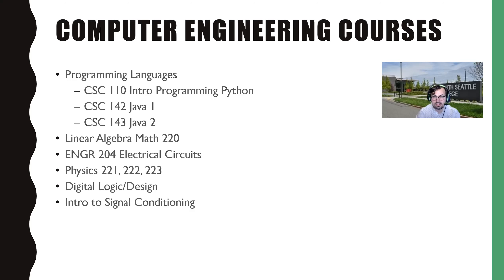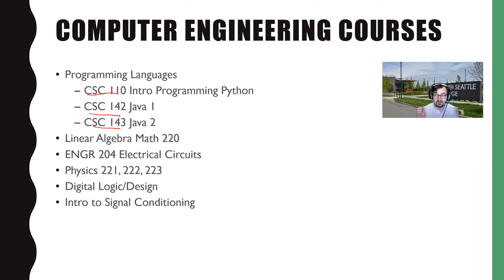Here are some engineering courses you can expect to take as a computer engineering student. For programming languages, the courses we have at South are CSC 110, CSC 142, and CSC 143. These are the core computer science major courses. The Python course teaches you a lot about structures and how we program, and then Java 1 and 2 — Java is a widely used language.